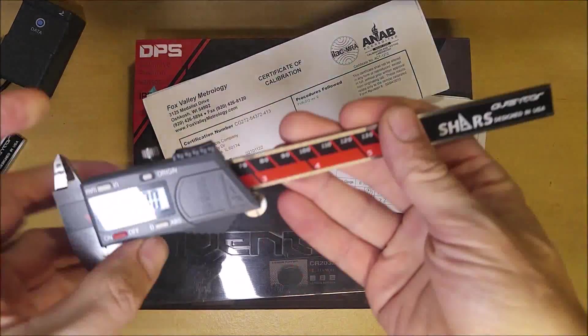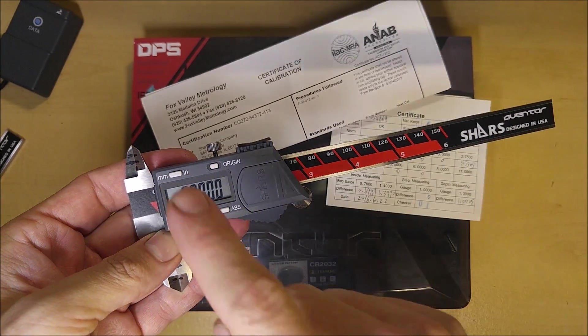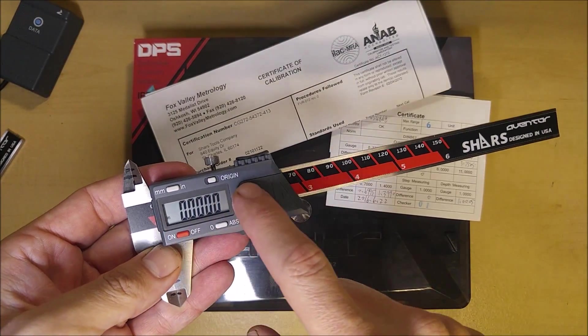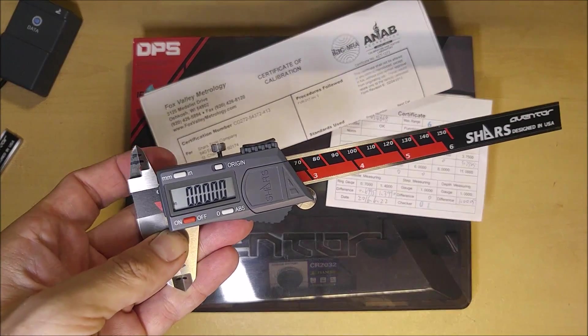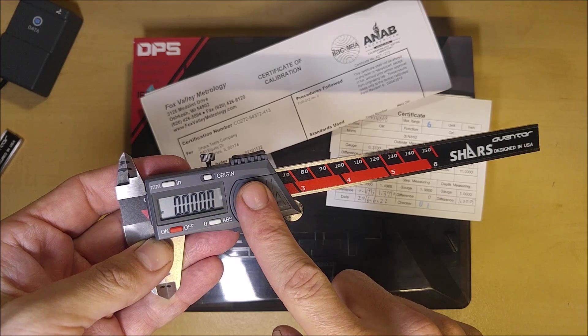The other good thing that this one has that none of the other ones in this price range with Absolute Origin has is that it auto shuts itself off and it consumes very little power when it's in its off state, as you'll see here in a minute. I'm going to do a full power consumption test with the caliper on and off.